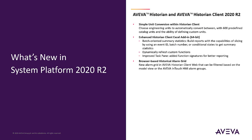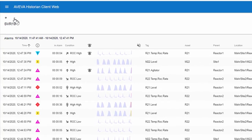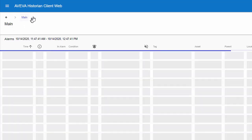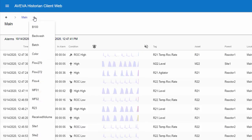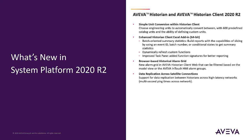Browser-based historical alarm grid. We've added an alarm grid to Historian Client Web, supporting both the system platform model view and InTouch alarm groups. In addition, data replication across satellite connections now offers greater optimization and support for high-latency networks between Historians.